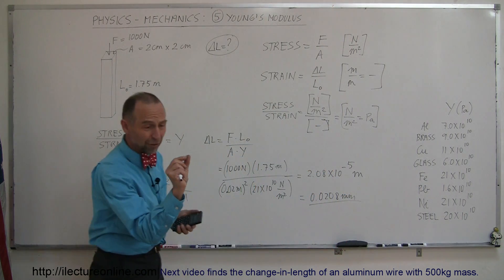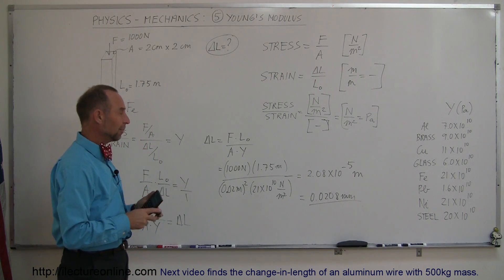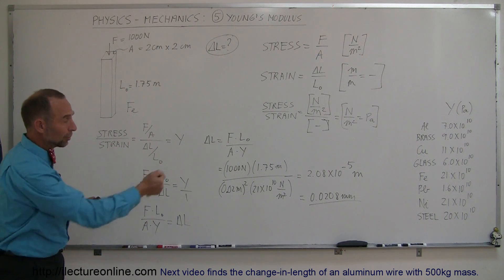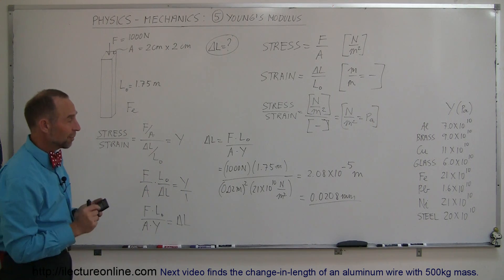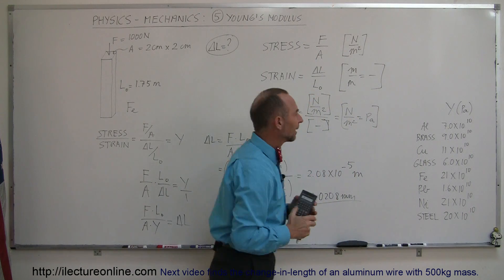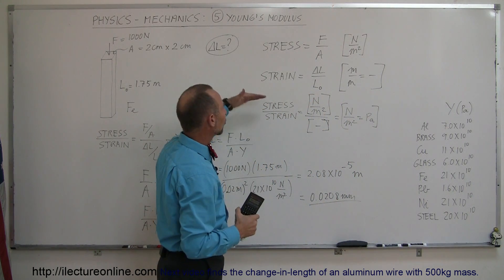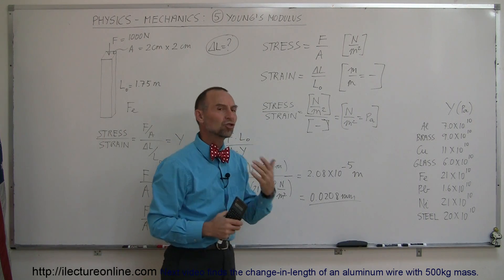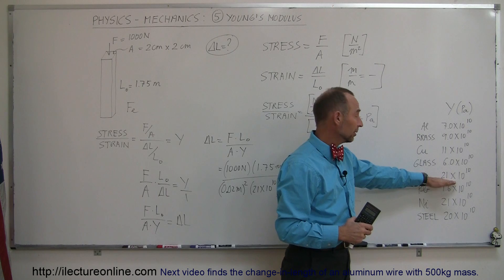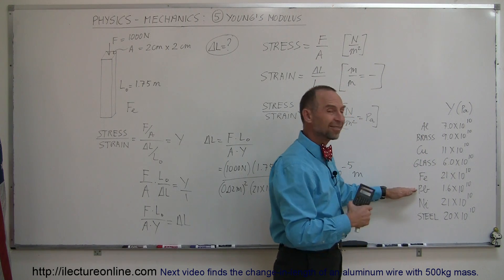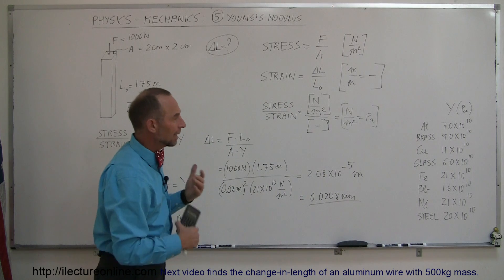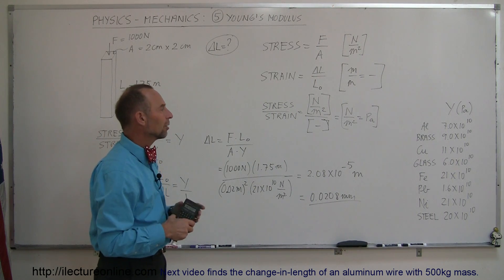That's a very small distance. Even with a force of 200 pounds on a steel beam that's 2 centimeters by 2 centimeters — less than an inch — you would not deform the beam very much in length. It would be a very small deformation. Young's modulus represents the amount of stress required to obtain a certain strain. Iron requires much greater force per unit area to deform a certain amount than lead does.